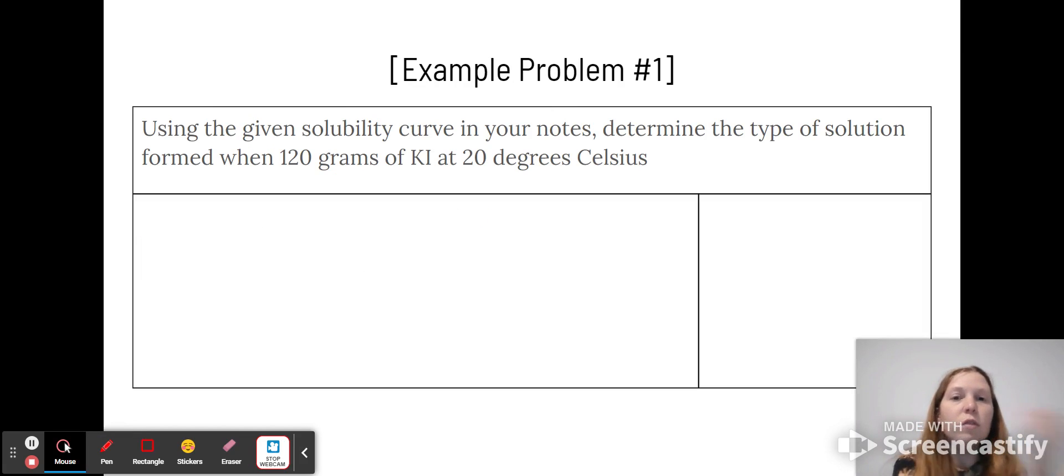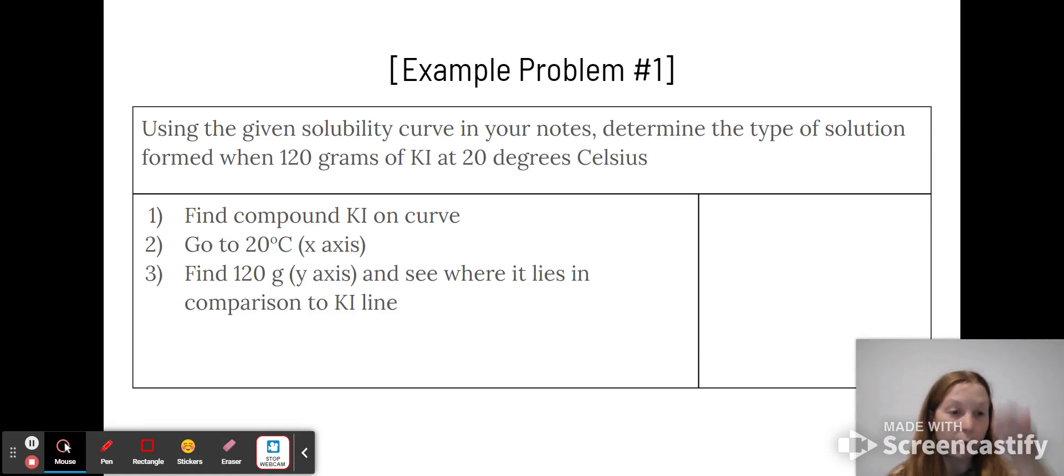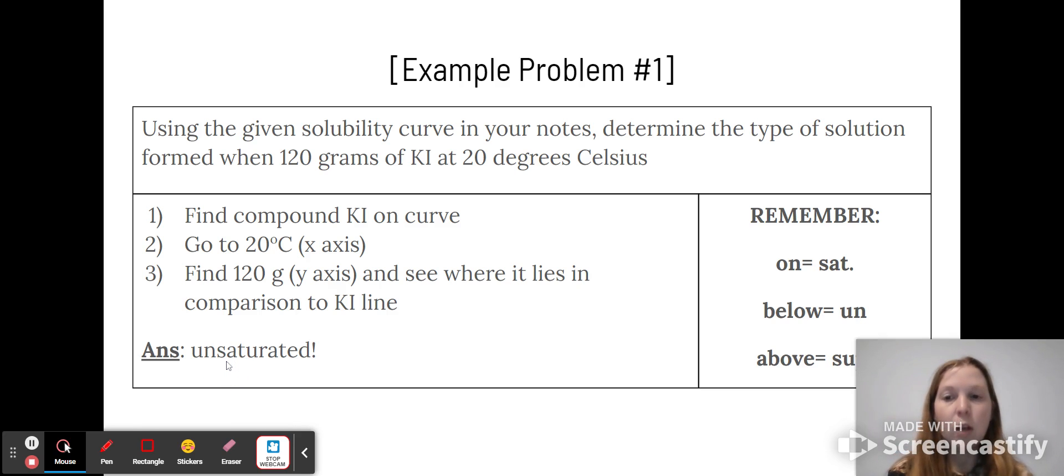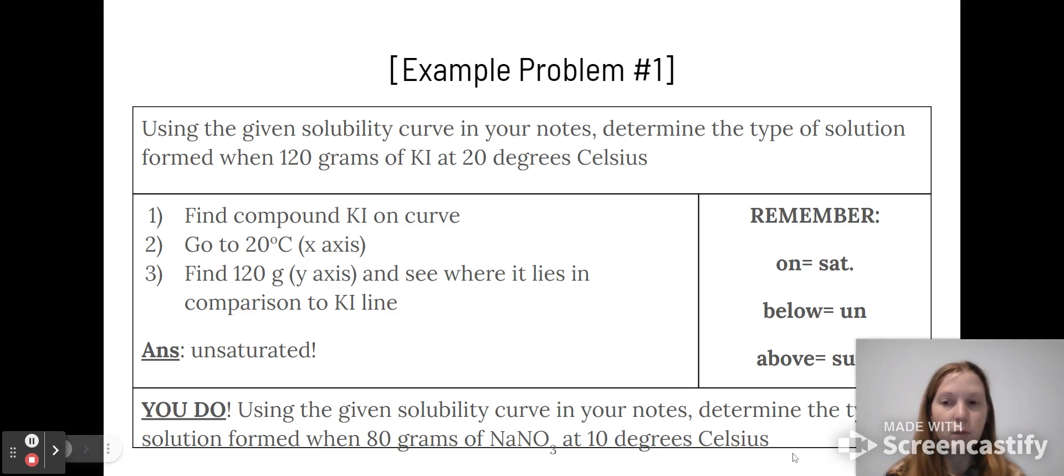So let's try this example. You'll use the curve in your notes. Determine the type of solution formed when 120 grams of potassium iodide is dissolved at 20 degrees Celsius. First you find KI on the curve. You go to 20 degrees Celsius on your x-axis. You go up to 120 on that 20 degree line and see where that falls in comparison to your KI line. When you do that, you'll see that you actually could dissolve more, which means this would be an unsaturated solution. Remember, on the line is saturated, below is unsaturated, and above is supersaturated. Go ahead, pause the video and try this example.